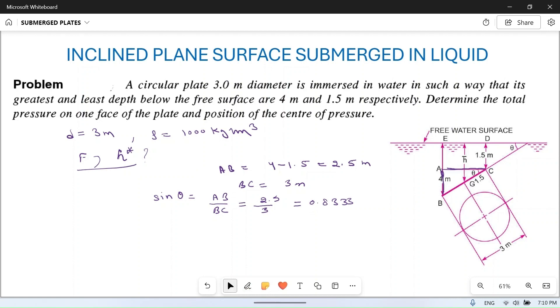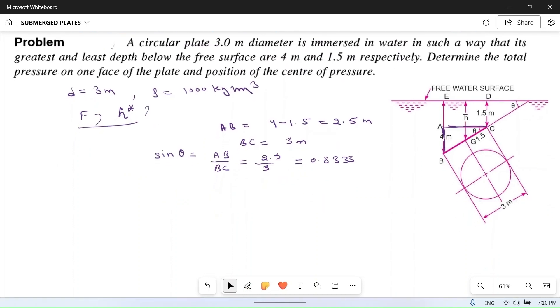Now what is F? F is equal to rho g A h bar. Rho is already known, 1000 kg per meter cube. g is 9.81 meter per second square, acceleration due to gravity. Area of circle is pi by 4 d square.